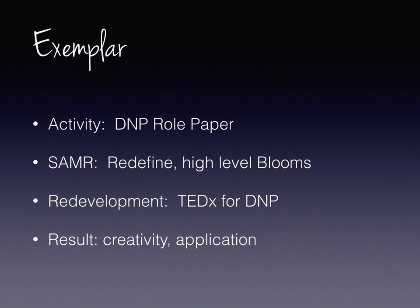I'm going to give you three or four examples of things we did in our program that we were able to transform using technology. The first is the role paper for the DNP. Initially, students came to the DNP program and in their first semester we asked them to write a paper about why they were there, what they wanted to do, how they planned to make a change, and how they planned to integrate what they learned in the DNP into professional practice. I was just tired of grading it — it was a five-page paper and everybody's paper sounded the same.